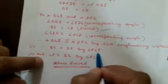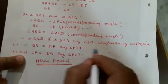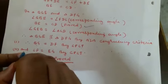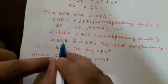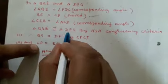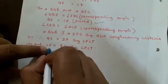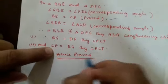Therefore BG is equal to DF by CPCT. First part proved. And since triangle BGE is congruent to triangle DFG, CF is also equal to EG by CPCT. Hence both parts proved.